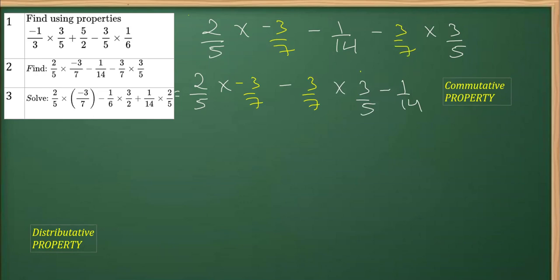Now as you can see that 3/7 is common, so we'll be taking 3/7 common outside the bracket and then multiplied. What is left from these two is 2/5 minus this, minus 3/5. This was another minus here so we missed the minus sign, minus 1/14.